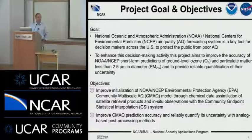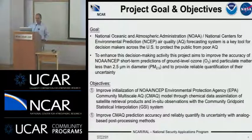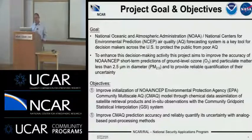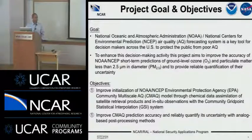NOAA and ANSEP produce air quality forecasts throughout the country, which are a key tool for decision makers across the US to protect the public from poor air quality. Our main goal is to improve the accuracy of these predictions for both ozone and PM2.5, as well as to provide decision makers with reliable uncertainty quantification. Our first objective is to improve the initialization of the CMAQ model — the EPA Community Multi-Scale Air Quality model used by ANSEP — through chemical data assimilation of satellite retrievals with the community Grid-point Statistical Interpolation, the GSI system.